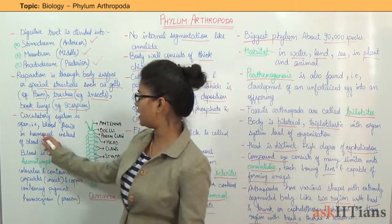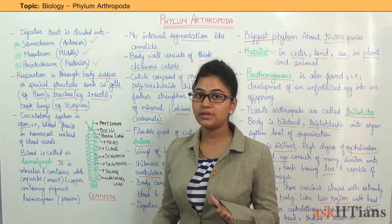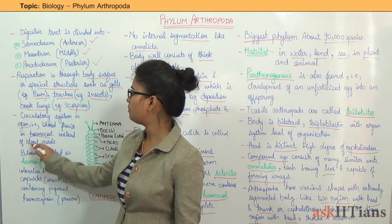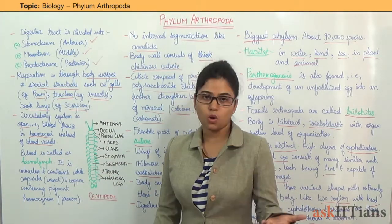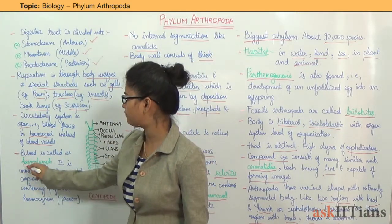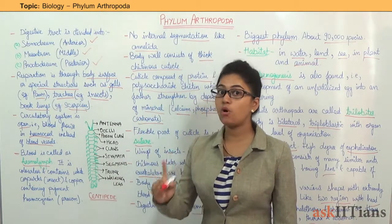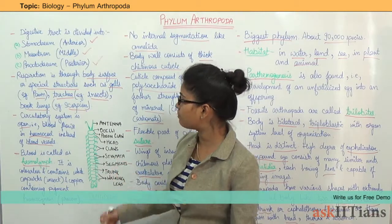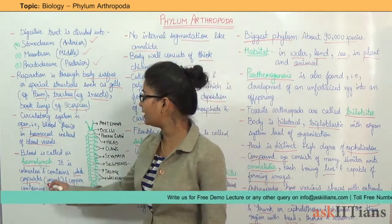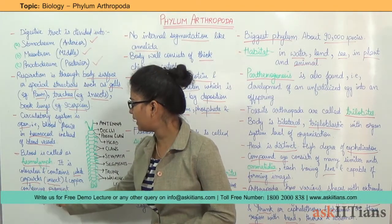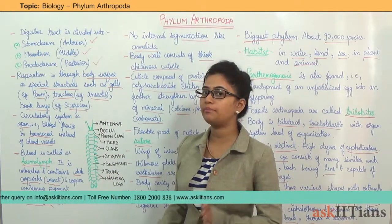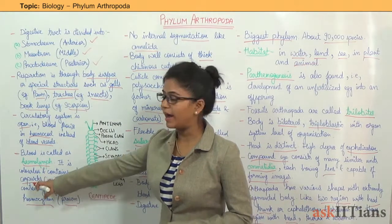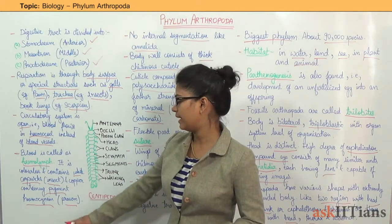The circulatory system is open, so the blood flows through the body cavity — the hemocele — instead of blood vessels. The blood of Arthropoda is known as hemolymph. It is colorless and may contain white corpuscles as in the case of insects, or a copper-containing pigment called hemocyanin as in the case of prawns.